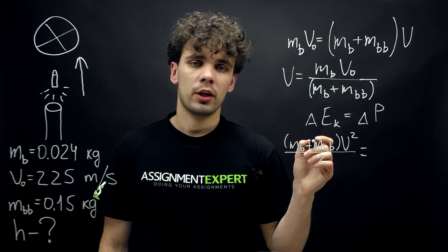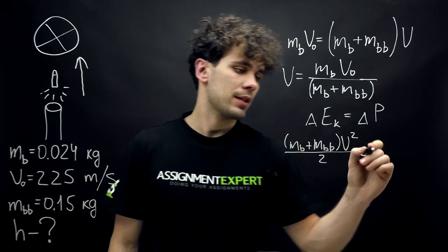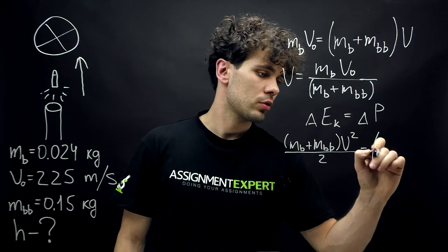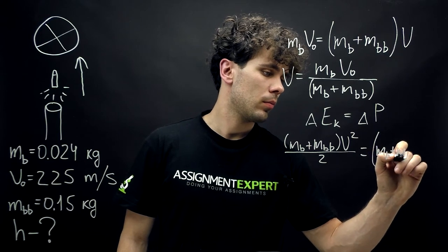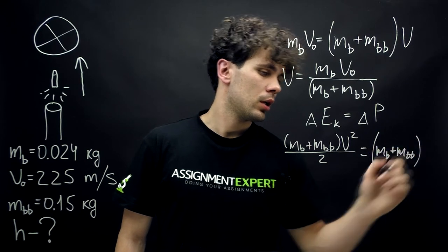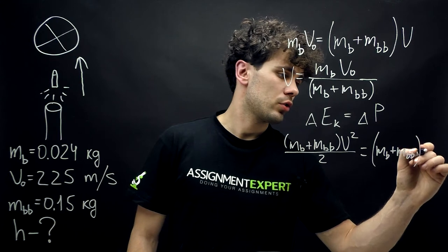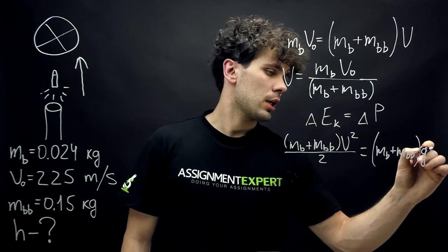And the potential energy is the masses of our two objects, bullet and baseball, times the free fall acceleration G times the height.